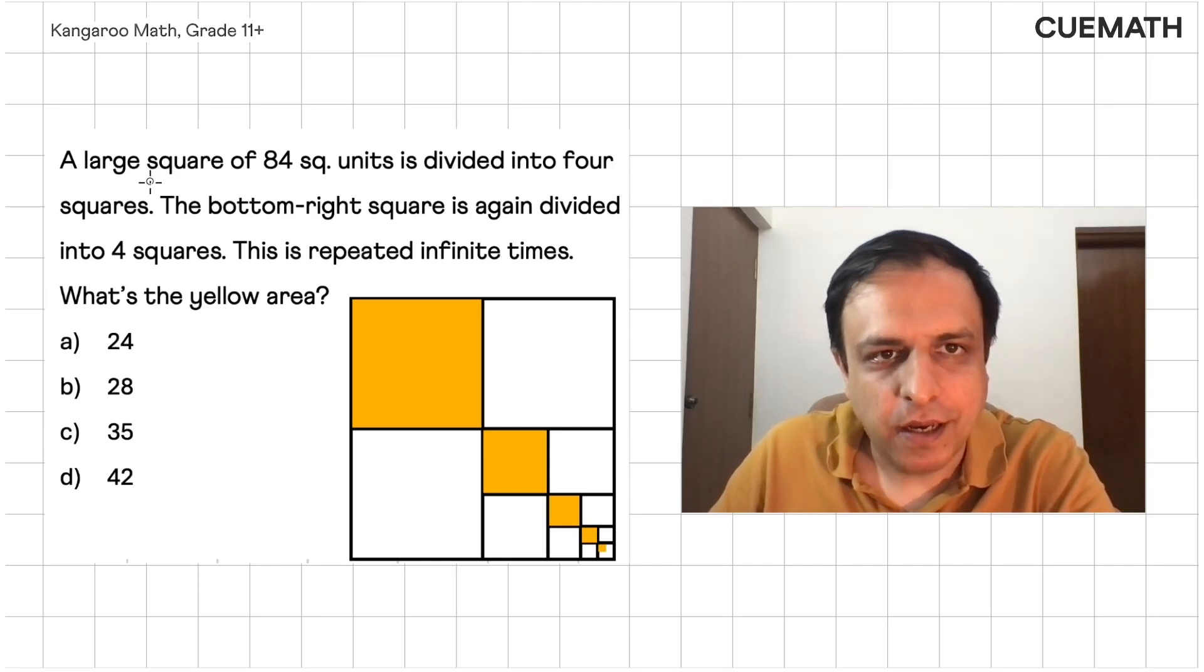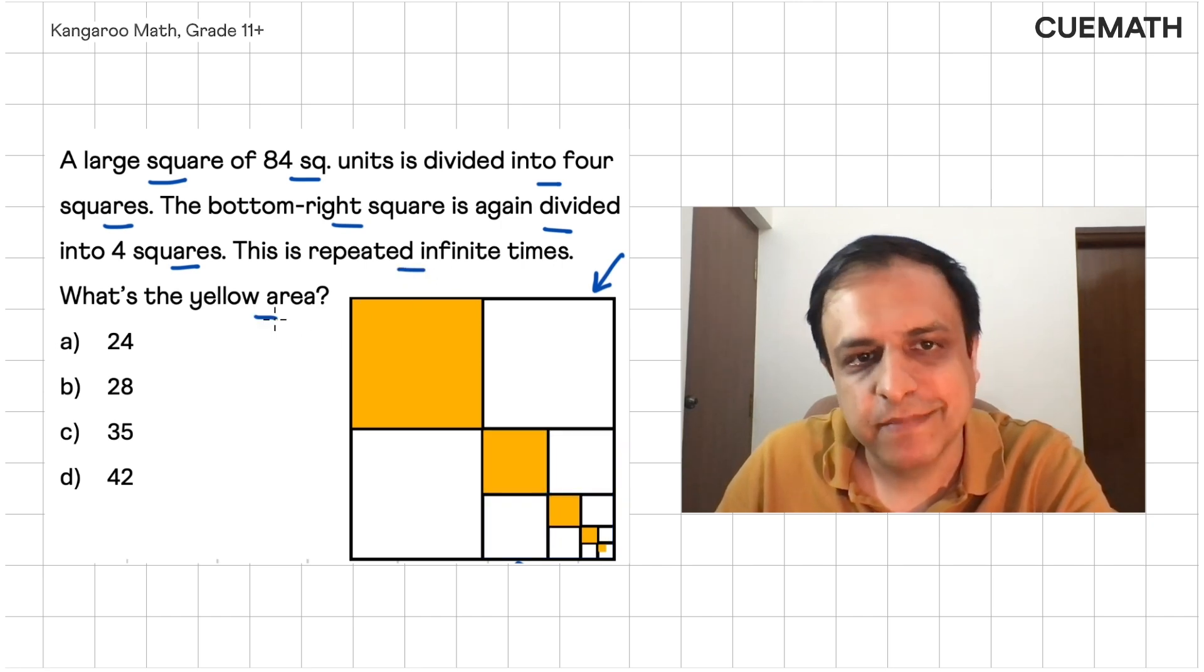Here's a cool question. A large square of 84 square units, this square is divided into four squares. The bottom right square, which is this square here, is again divided into four squares. This is repeated infinitely many times. What's the yellow area?